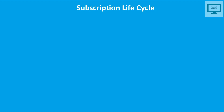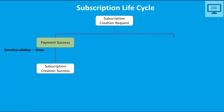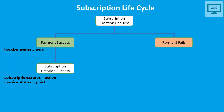For the subscription lifecycle, assuming you have collected customer details with payment information and are creating the subscription request — let's start with the positive case where payment is successful. Once payment succeeds, the Stripe event status changes, the invoice status becomes true (meaning subscription created successfully), the subscription status changes to 'active', and the invoice status changes to 'paid'.